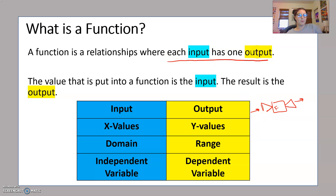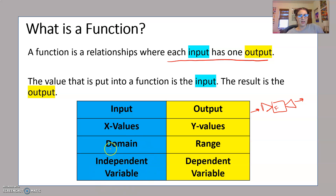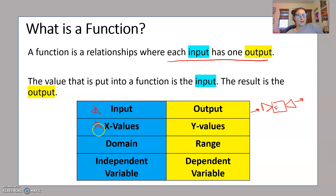Input and output are the key words when we talk about functions. Input is also what the x values are — we might also call it the domain, which is the set of all x values, or the independent variable. Any of these words are interchangeable, but today we'll mostly be seeing input and x values. So x is input, input is x.